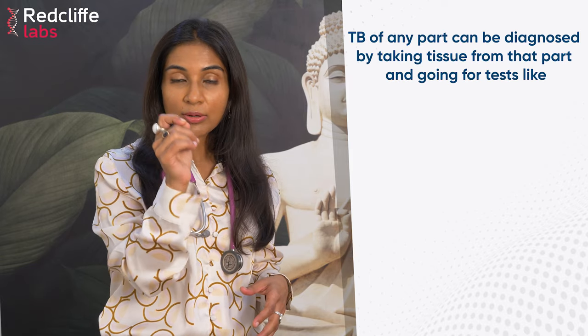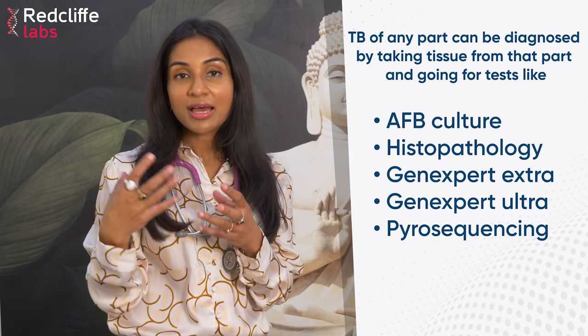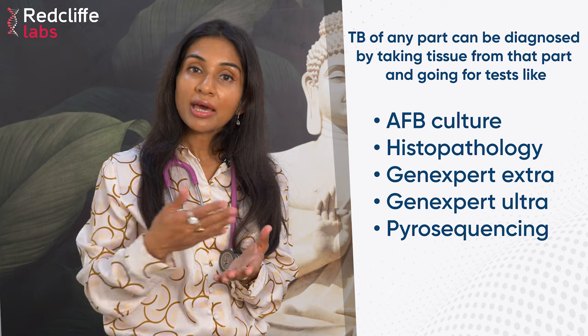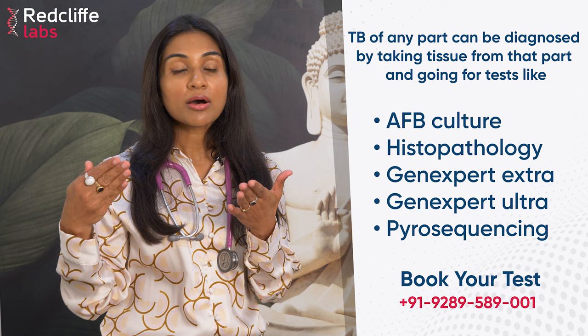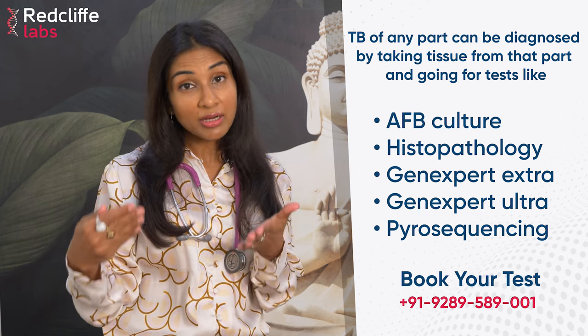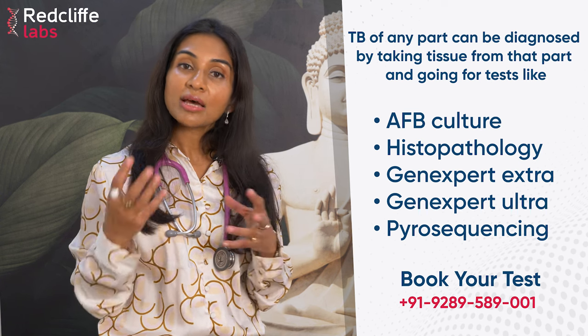Similarly, if there is brain TB, heart TB, bone or spine tuberculosis, or involvement of the genital area, tissue can be taken from those sites. Tests including AFB Stain, Cultures, Histopathology, and molecular assays such as GeneXpert Extra, GeneXpert Ultra, and sequencing can also be sent.